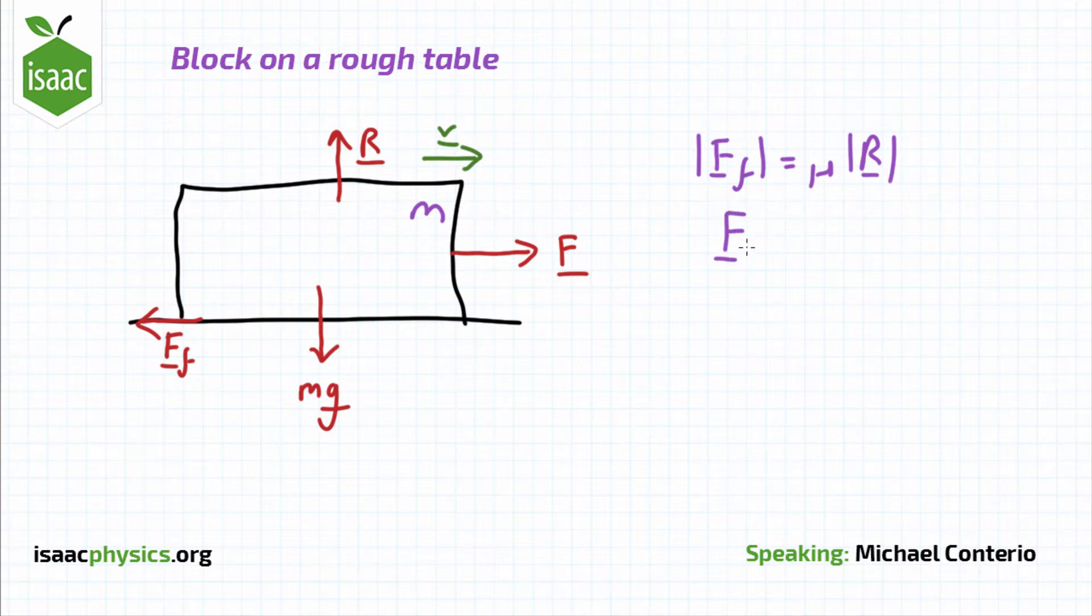And from Newton's second law, the total of all the forces acting upon the block is equal to its mass times by its acceleration, which in this case is equal to zero because it's travelling at a constant velocity.